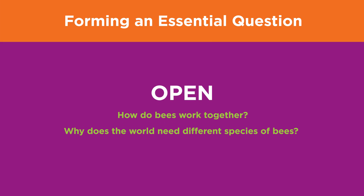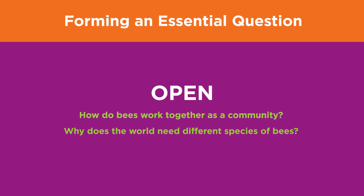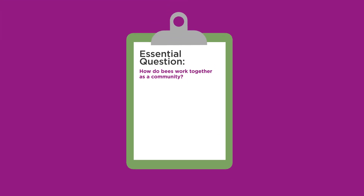You may need to revise these too to make them richer. For example, 'How do bees work together?' could become 'How do bees work together as a community?' Now we have two possible essential questions from our brainstorming. Choose the one that feels the most meaningful and interesting to you, then get it approved by your teacher.